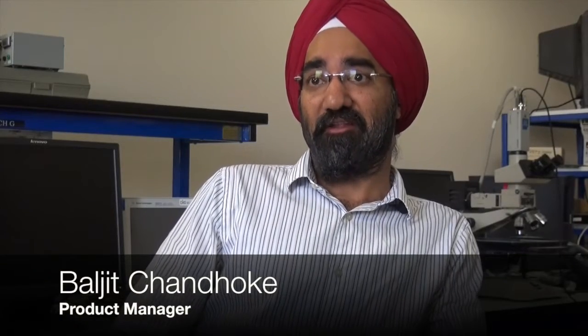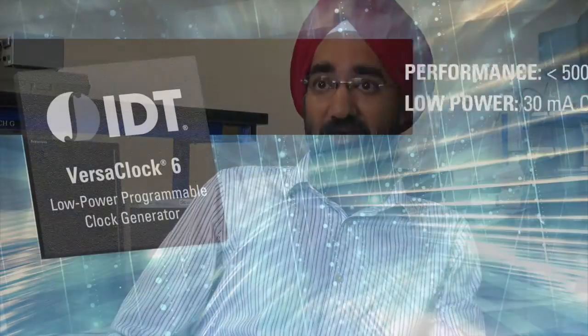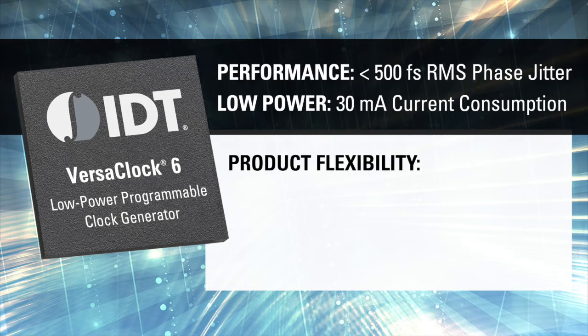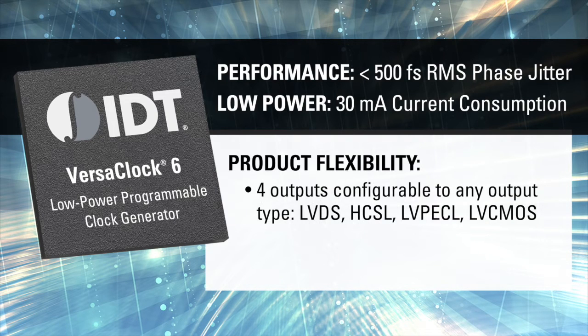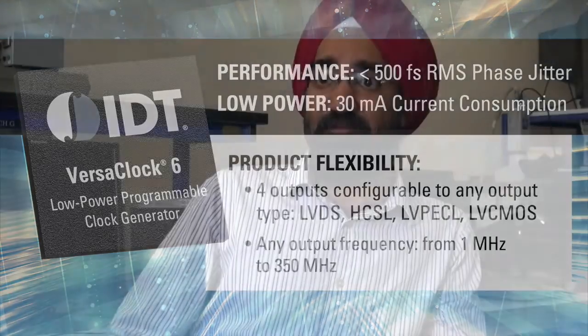The key features of VersaClock 6 are its best-in-class performance with sub-500 femtosecond additive jitter at extremely low current consumption of 30 milliamps core current. In addition, this product family has four outputs which are totally flexible and can be configured to be any output type — LVDS, HCSL, LVPECL, or LVCMOS — and can have any output frequency from 1 MHz to 350 MHz in step sizes as granular as one part per billion.